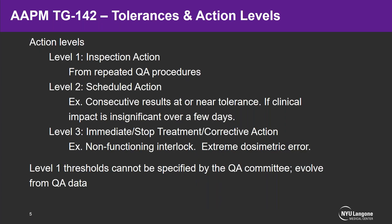Another point from TG142 is the tolerances and action levels, where a QA committee should set up these action levels. Level one is the inspection action, developed from repeated QA procedures. Level two is a scheduled action — examples include consecutive results at or near a tolerance, or a clinically insignificant impact over a few days. Level three is an immediate stop-treatment or corrective action, such as a non-functioning interlock or extreme dosimetric error. The level one thresholds cannot be specified by the QA committee — they have to evolve from QA data.